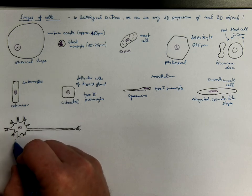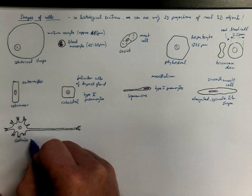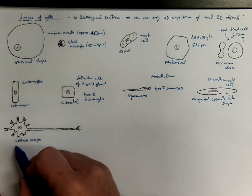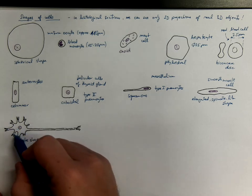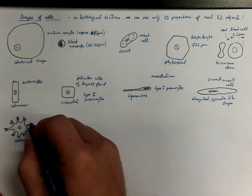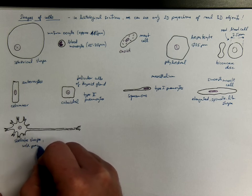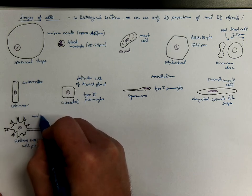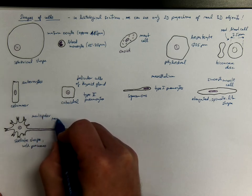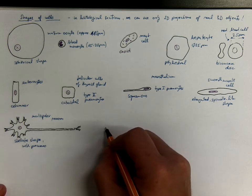We can call it stellate shape, which comes from the Latin word for star, Stella, because it resembles a star. We have processes. And an example would be stellate shape with processes. And a good example would be a multipolar neuron of spinal cord or brain.